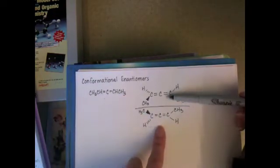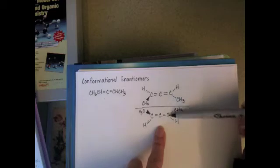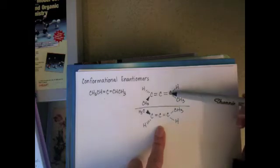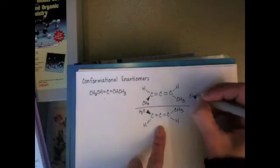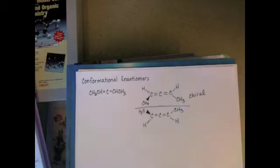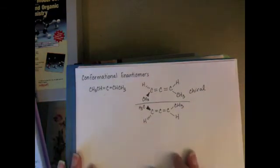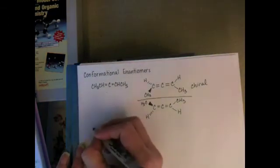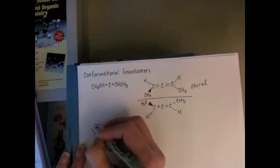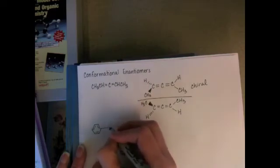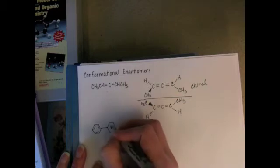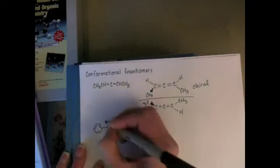Because these two molecules are different structurally from each other, the two mirror images are different from each other, this molecule is chiral, even though it has no stereocenters at all. So the other example that we saw for a conformational enantiomer is this molecule.